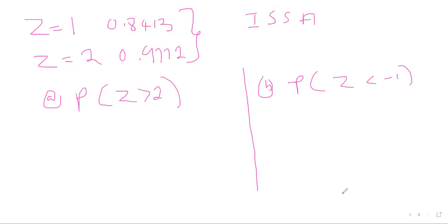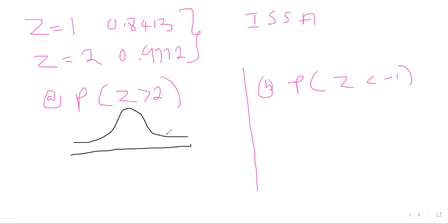Let's redo all three cases together with z = 1 and z = 2. Reading z = 1.0 gives 0.8413; reading z = 2 gives 0.9772. Now apply ISA for: probability z greater than 2, and probability z less than negative 1.